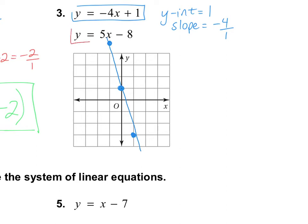The second equation is y equals 5x minus 8. The y-intercept is at negative 8. I notice my graph only goes down to negative 4, so I need to extend it further: negative 5, negative 6, negative 7, and way down here is negative 8. We'll go ahead and put our point there.